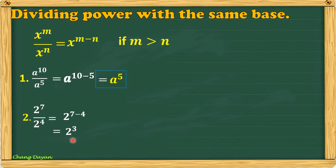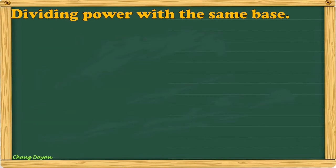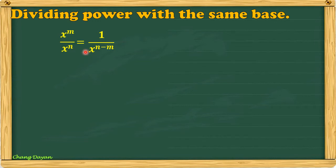Next, when we have x raised to m all over x raised to n and the exponent of the numerator is less than the exponent of the denominator, what you are going to do is get the reciprocal and subtract the exponent of the denominator from the exponent of the numerator.